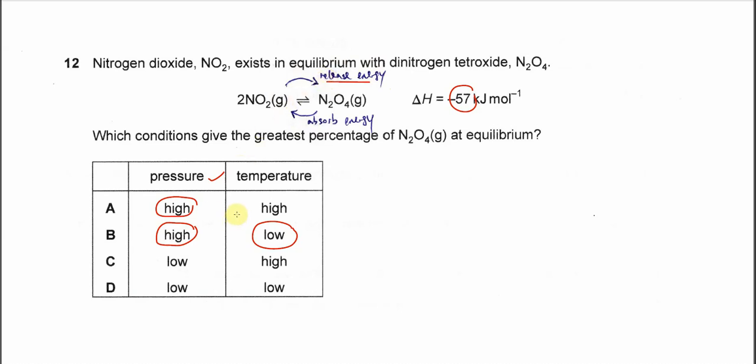Therefore, the two conditions that will give the greatest percentage of N2O4 at equilibrium are high pressure and low temperature. So the answer is B. That's all, thank you.